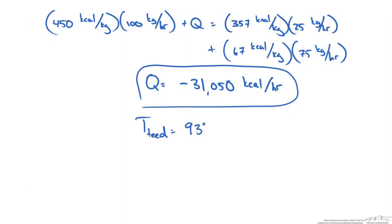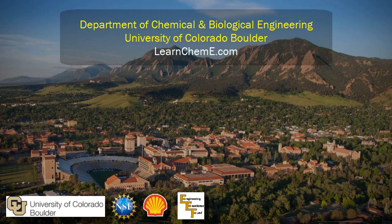So going from 93 degrees Celsius to 82 in our drum with no change in pressure we would have to remove 31,050 kcal per hour and that would give us the split that was specified in our problem statement. Thank you.